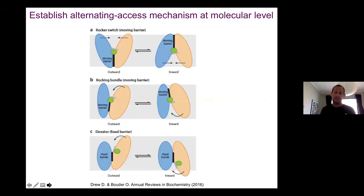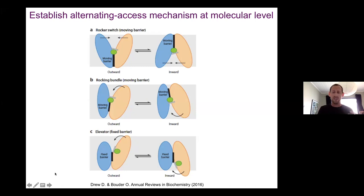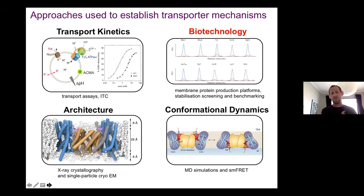When you want to develop a mechanism using structures, we have to appreciate what we're trying to do. To understand how something works, we obviously need multiple conformations. We're trying to understand a picture of the so-called alternating access cycle, which shows that transporters can come in three different flavors of how you might move a substrate across the membrane. A structure by itself is just one snapshot, and we obviously need multiple conformations to really understand how something's working.